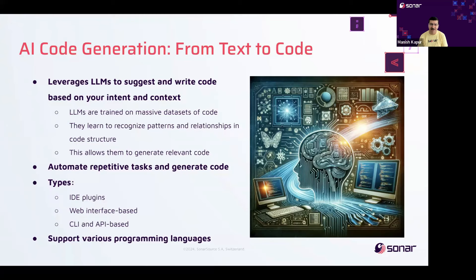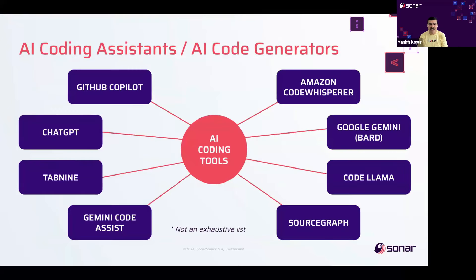Next, you have the API-based LLMs for code generation. These provide programmatic access for integration into custom applications or workflows, offering flexibility and control over code generation. An example would be OpenAI Codex API or the Tab9 API. This is ideal for developers building custom tools or requiring some advanced features. Today, as a developer, you have several choices when it comes to using AI coding assistance. Commonly used tools include GitHub Copilot, Amazon's Code Whisperer, ChatGPT, Google's AI code generation tools, CodeLlama from Meta, which is an open source model, Tab9, etc.